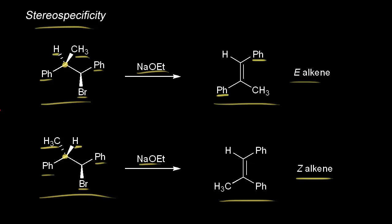You could also think about that going backwards. If you look at the Z-alkene product, because you know the product is a Z-alkene, you know the stereochemistry at this carbon — it must have this particular stereochemistry. Same thing for the other reaction: we form only the E-alkene, and because we form only the E-alkene, we know the stereochemistry at this carbon. So the stereochemical information is kept in a stereospecific reaction.